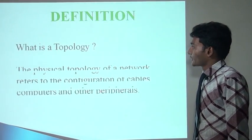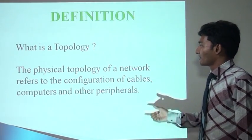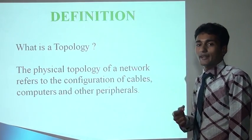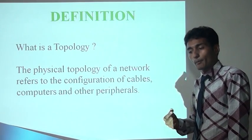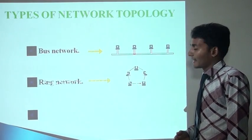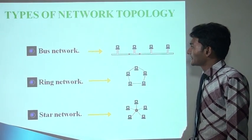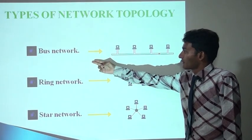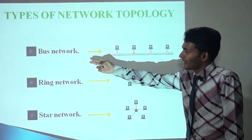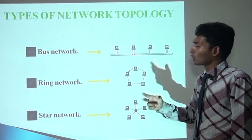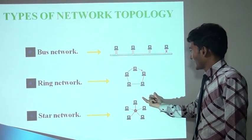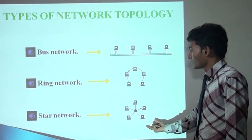What is topology? Topology means network configuration — the way we can configure a network and connect computers and peripheral devices. There are basically three types: bus network, ring network, and star network. Topology describes how they are connected with each other.